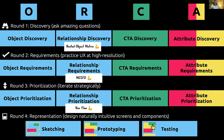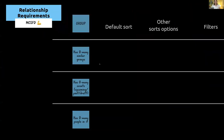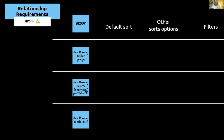We take that nested object matrix and bring it into relationship requirements. For every nested object, we look at the mechanics: how does groups have similar groups, what algorithm are we building, how do people actually join groups? We think about cardinality in deeper fidelity, and then we talk about sorts, filters, and dependencies.